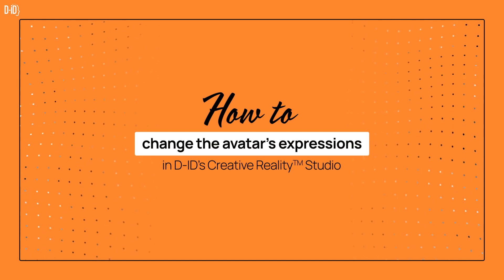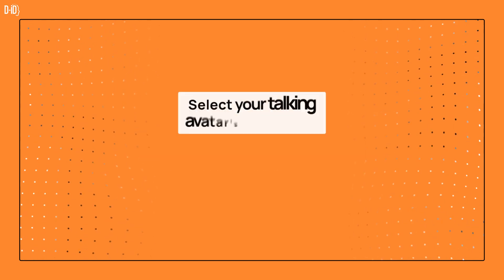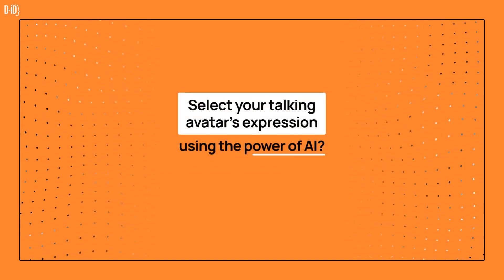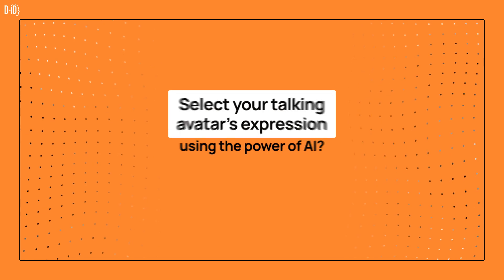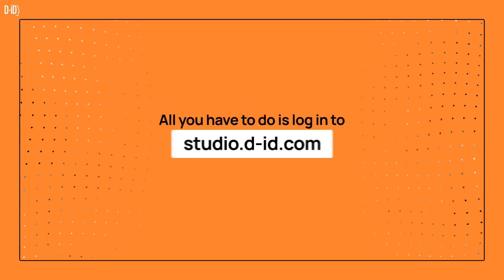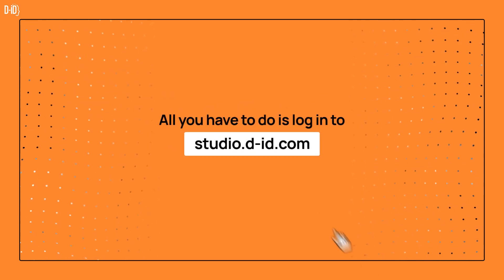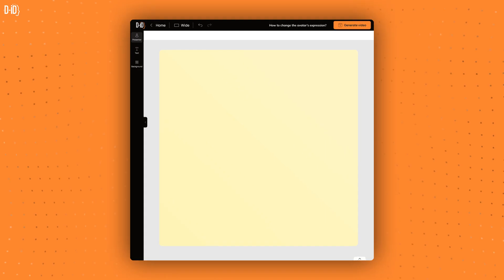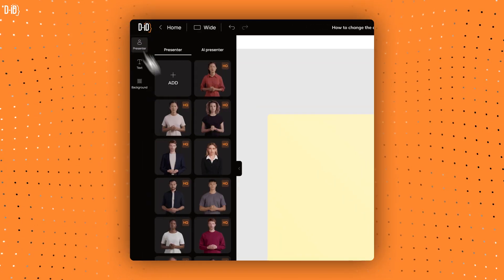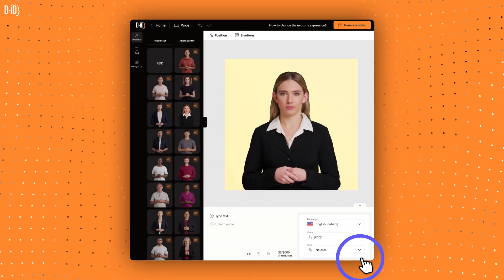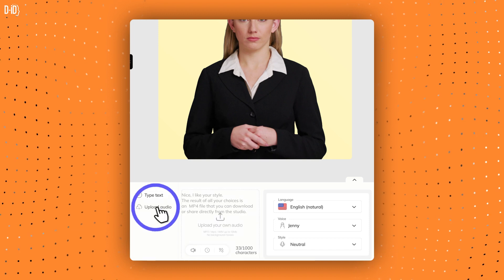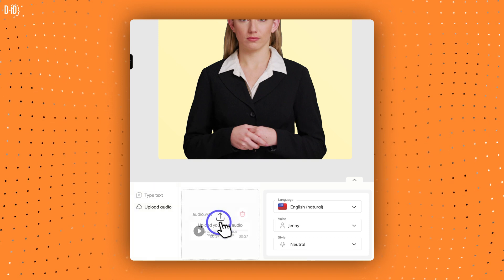Did you know that D-ID lets you select your talking avatar's expression using the power of AI? All you have to do is log in to studio.did.com, go to the Create Video page, select the presenter you want in your video, and type in what you want the avatar to say or upload an audio recording.